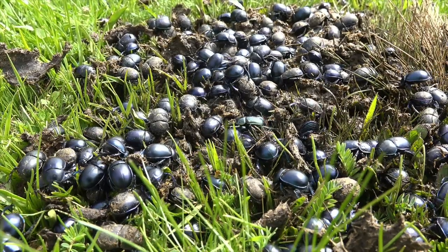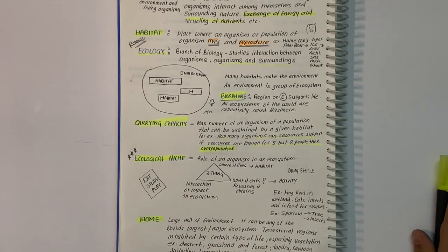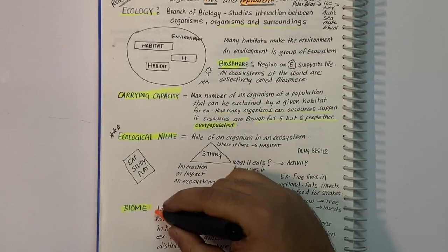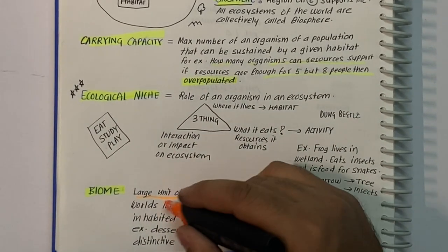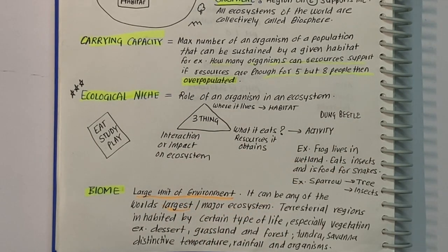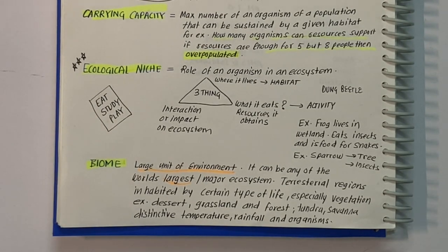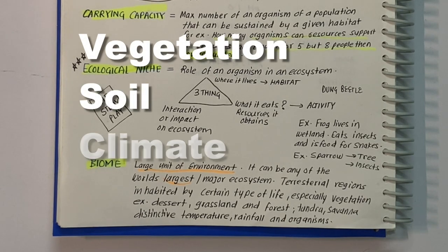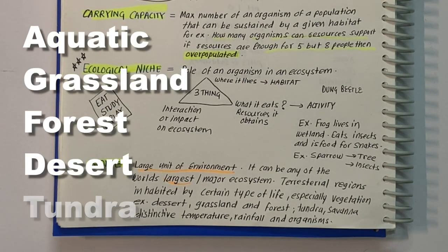A biome is a large community of vegetation and wildlife adapted to a specific climate. It is a large area characterized by its vegetation, soil, climate, and wildlife. There are five major types of biomes: aquatic, grassland, forest, desert, and tundra — though some can be further divided into freshwater, marine water, savannah, tropical rainforest, temperate rainforest, taiga, and so on.